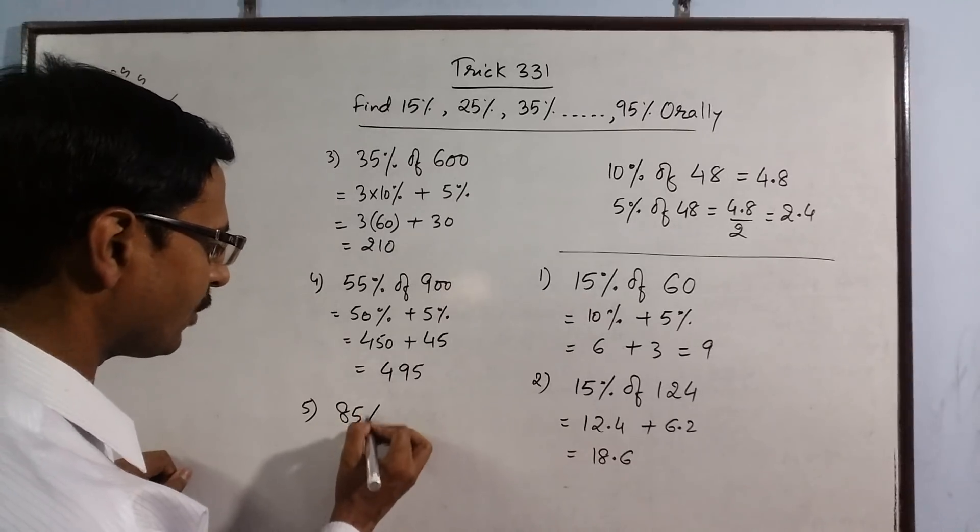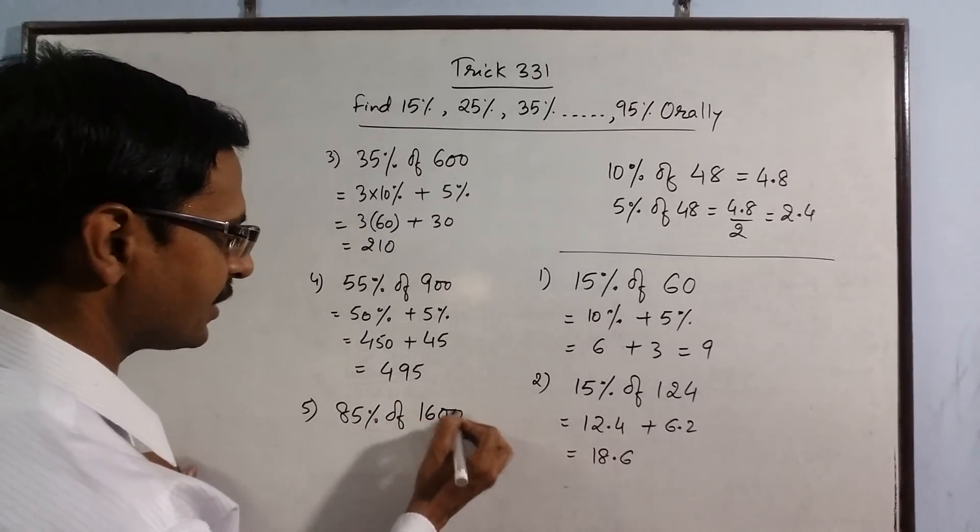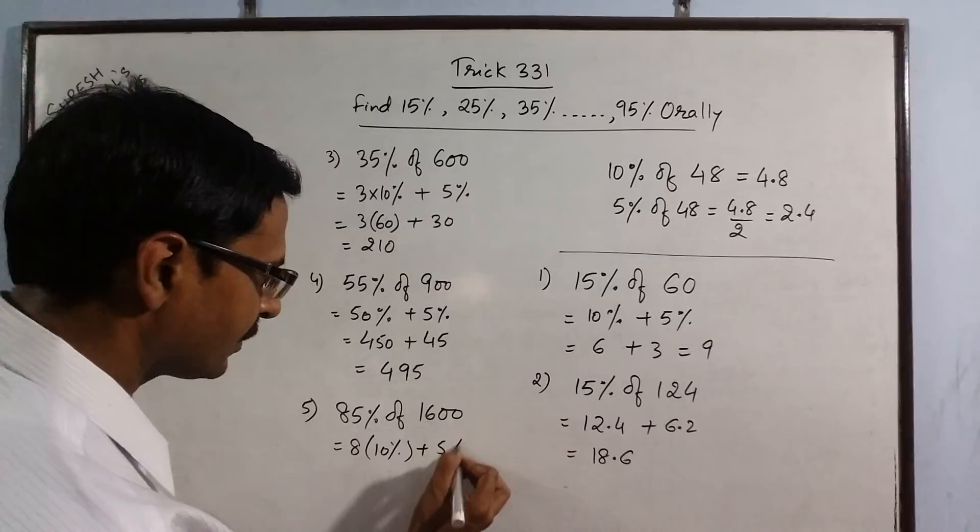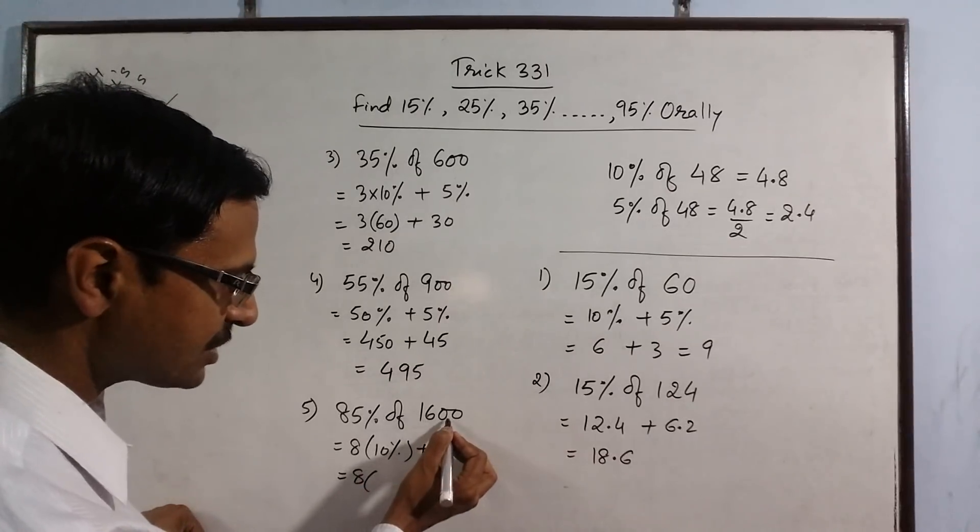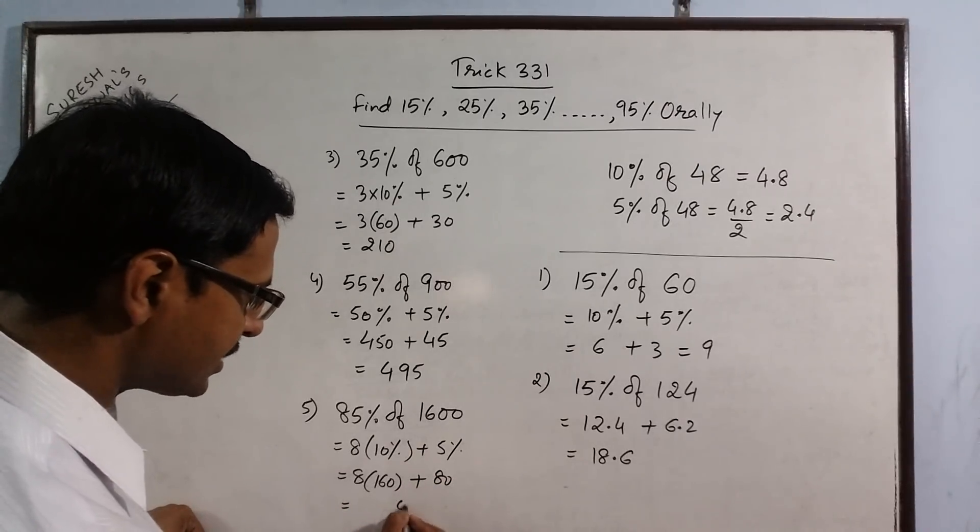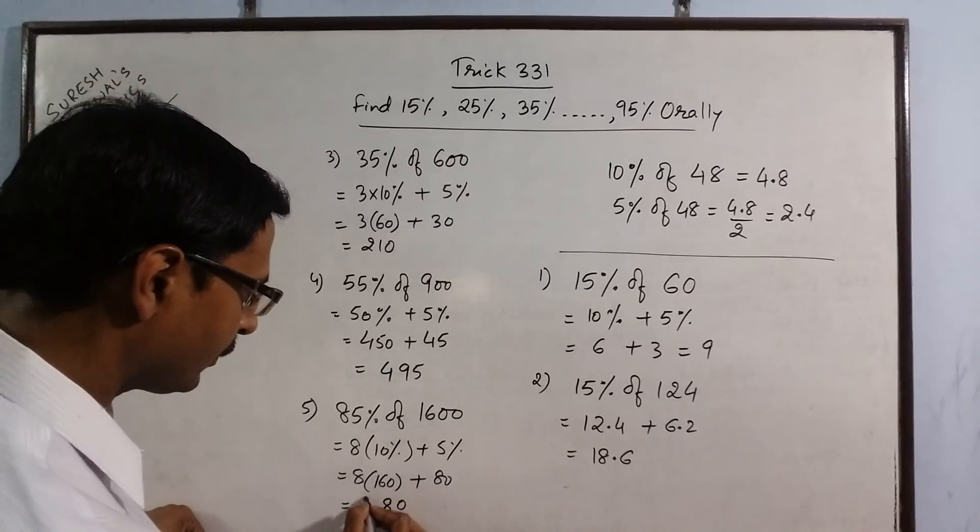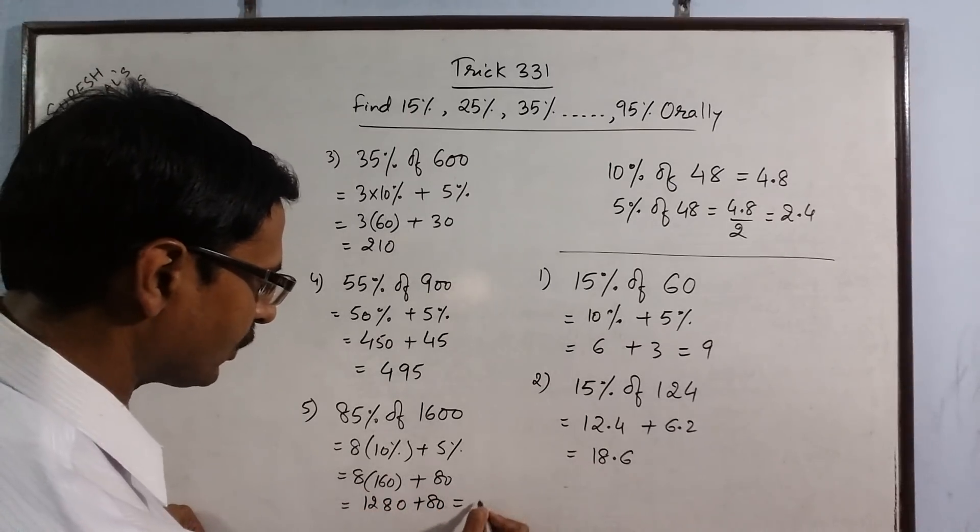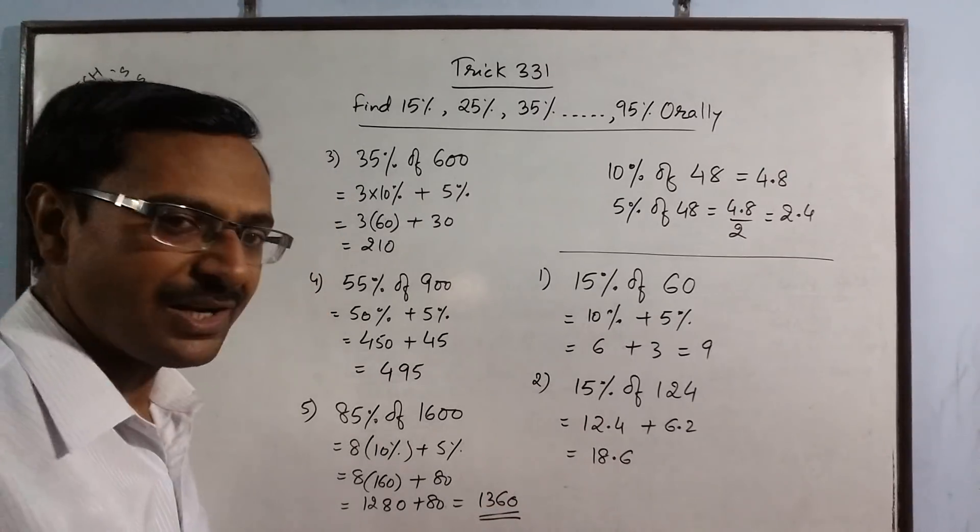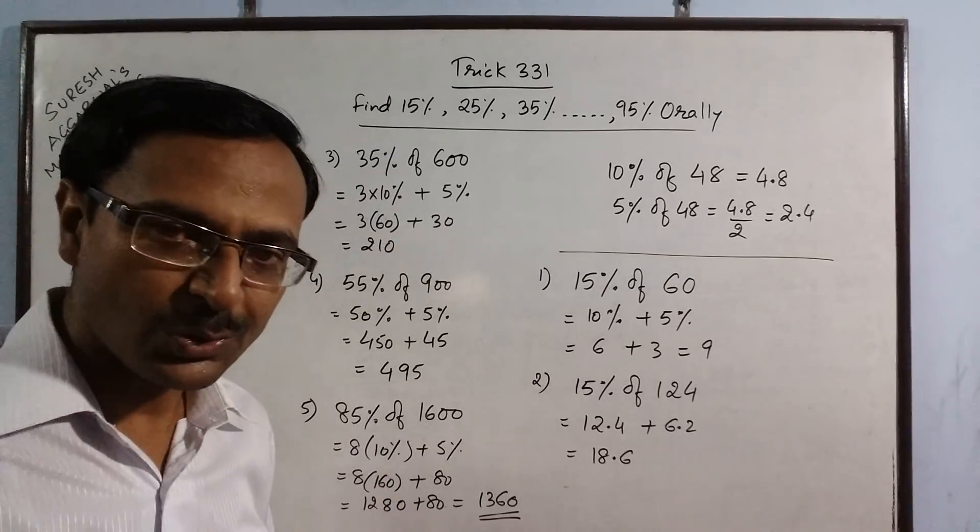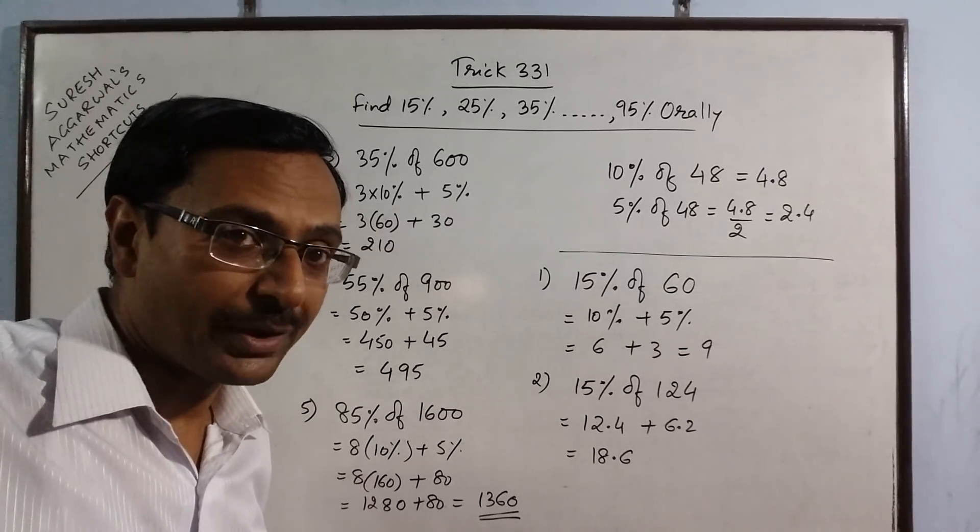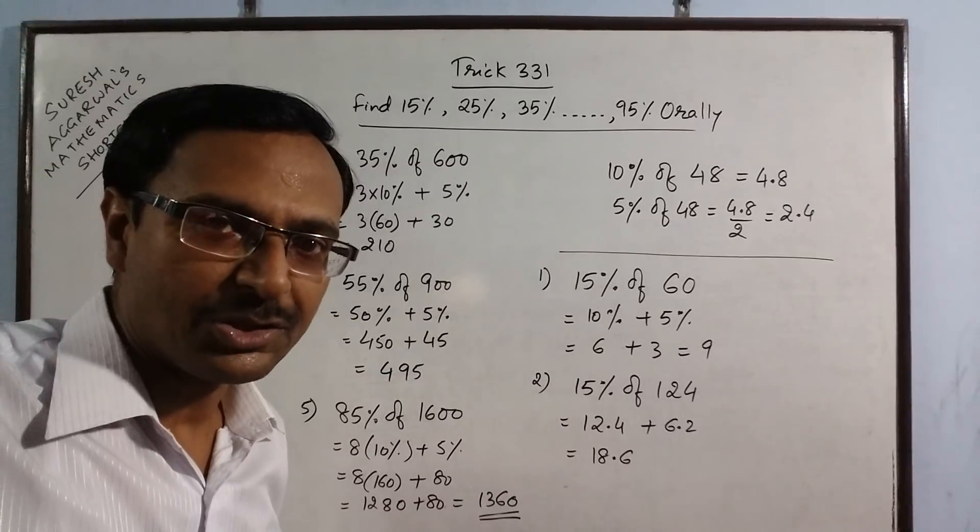One more example. Suppose we have 85% of a number, say 1600. Now you can calculate this very easy. 8 into 10% plus 5%. So 8 into what is 10%? One digit from the right side, 160, and what is half of 160? It is 80. So now you can just multiply 8 into 160, that's 1280 plus 80. So this will come out to be 1360 which is the required percentage, 85% of 1600. So you see calculations become very simple if you have knowledge of basics of what actually you want to do and correct attitude towards numbers.